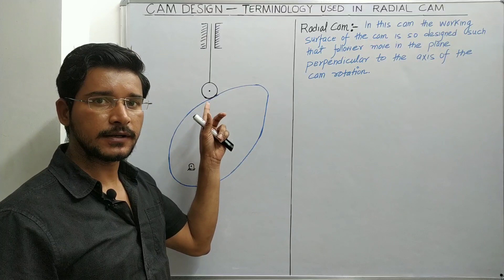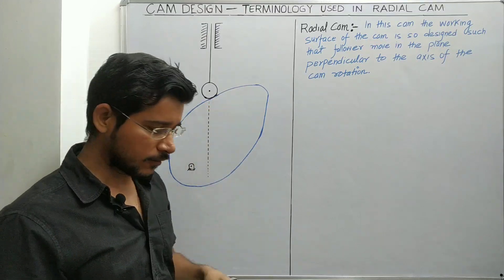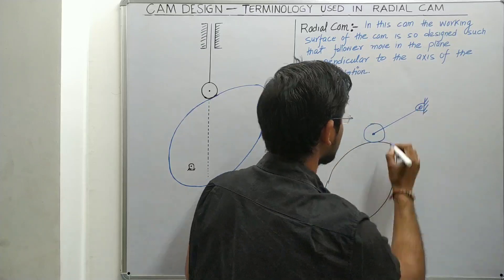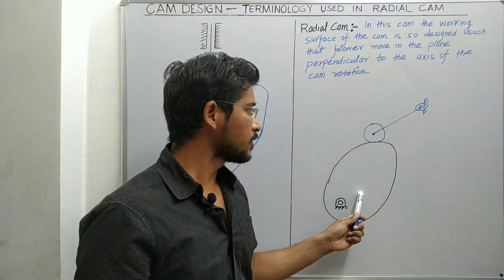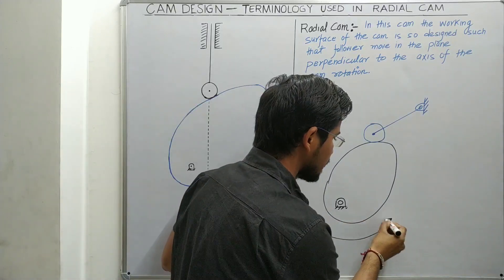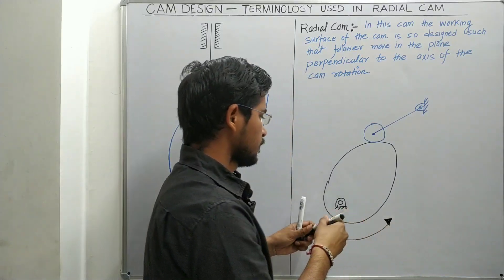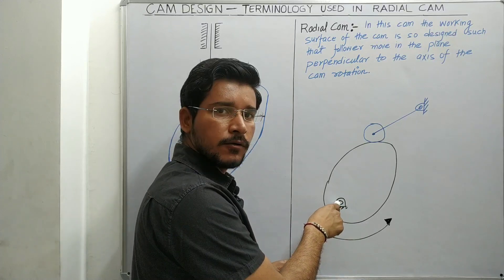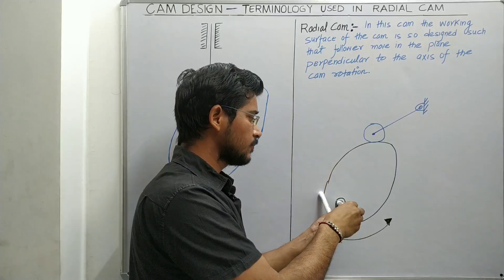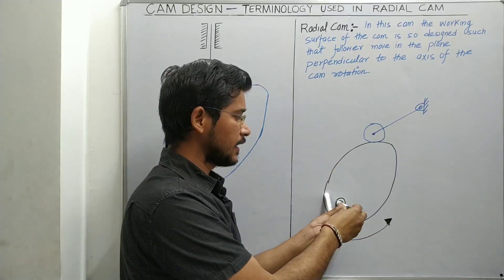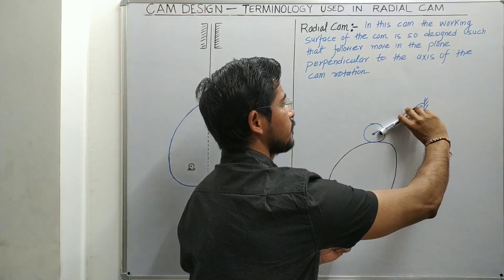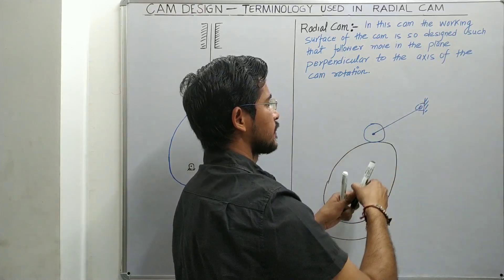If we talk about an oscillating follower, this is an oscillating follower and this cam rotates in the anti-clockwise direction about point O. The axis of cam rotation is perpendicular to this plane, and this follower oscillates.